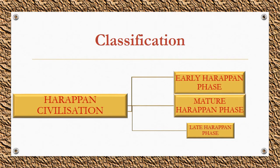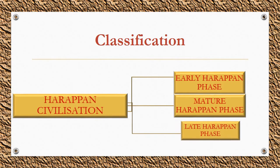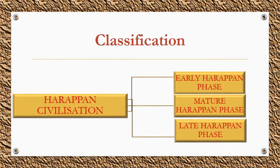The mature Harappan phase, also known as the integration era, was the urban phase of the Harappan civilization which shows the characteristics of a full-fledged civilization. Its time frame is around 2600 to 1900 BC. The late Harappan phase, also called the localization era, was the post-urban phase defined by the decline of cities.